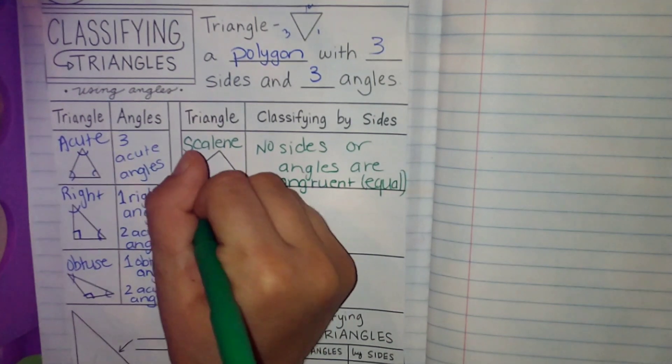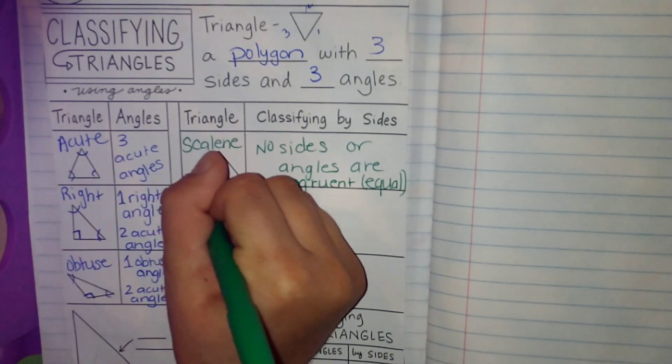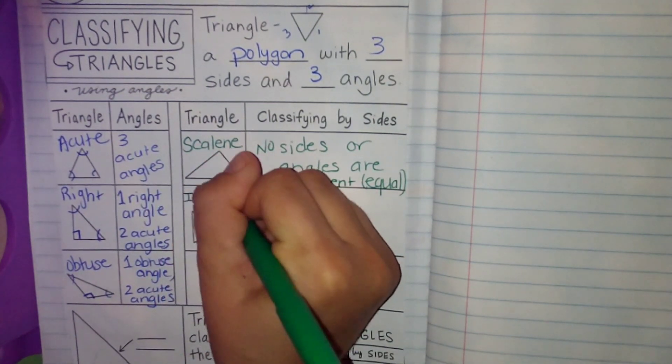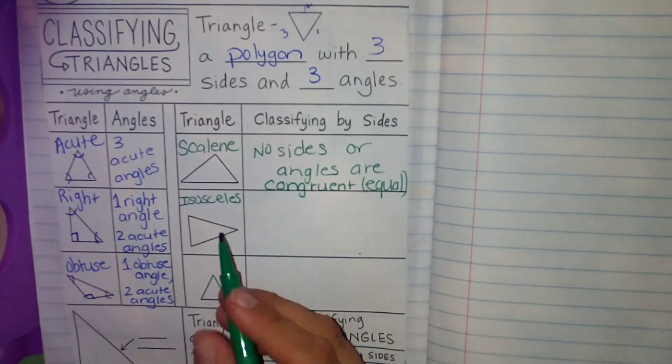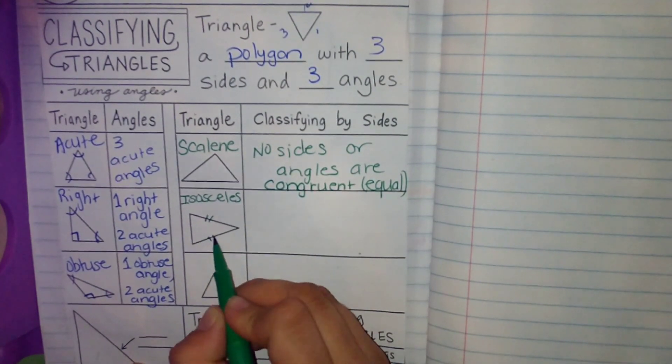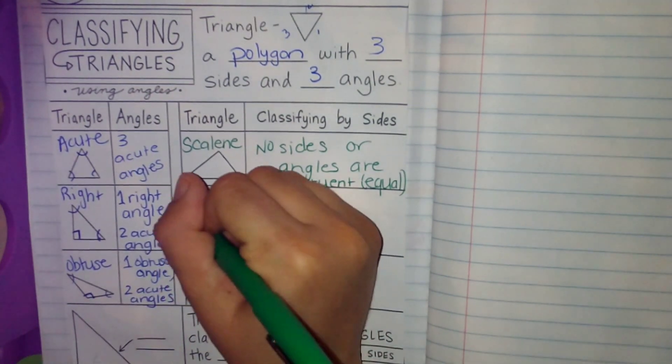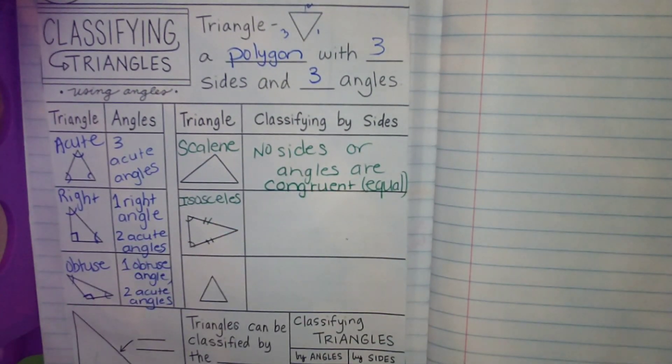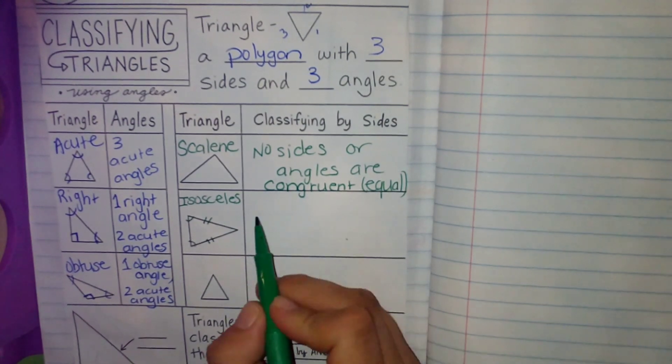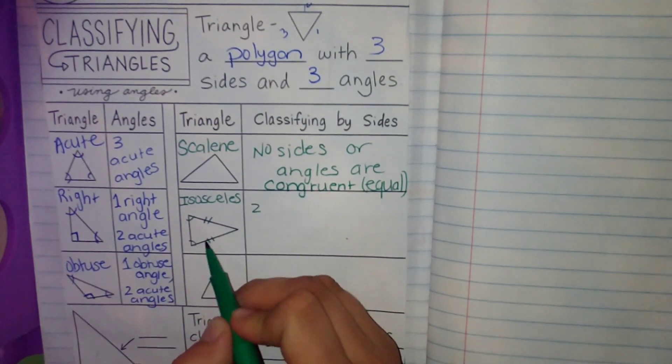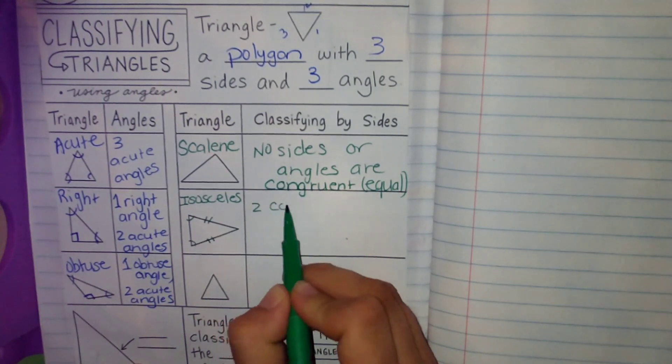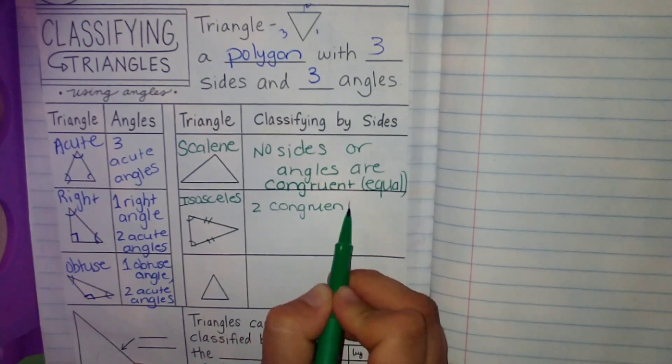The next one is isosceles, isosceles. And we have two equal angles, congruent angles. So we have two congruent sides. And those are marked by these two lines. That shows that they are equal and or congruent as we just learned.